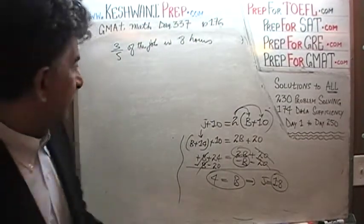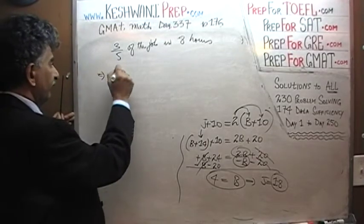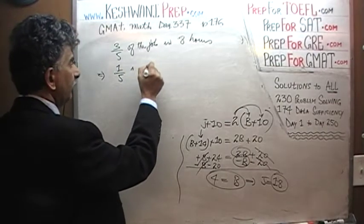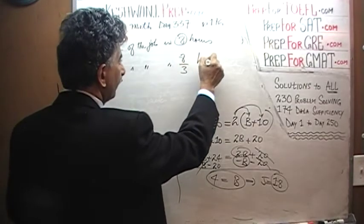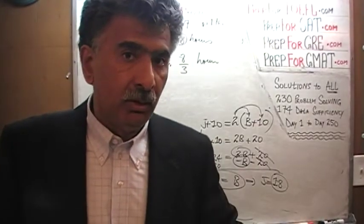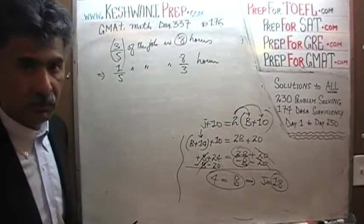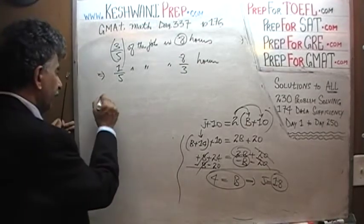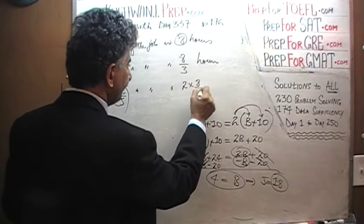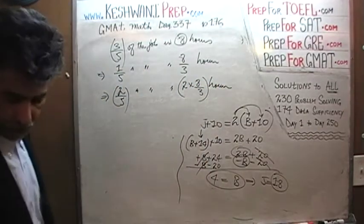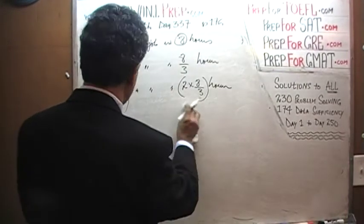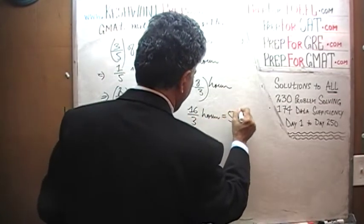Before we do any work at all, we should ask ourselves: if three-fifths takes eight hours, that obviously implies that one-fifth — which is one-third of the work — one-fifth of the job should take a third of this amount: eight over three hours. The question is, if it took eight hours to fill three-fifths of the pool, how long will it take before the swimming pool is completely full? In order for it to be completely full, we have to do the remaining two-fifths. If one-fifth takes eight over three hours, that implies that two-fifths of the job — the remainder — will take two times that amount. Two times eight over three.